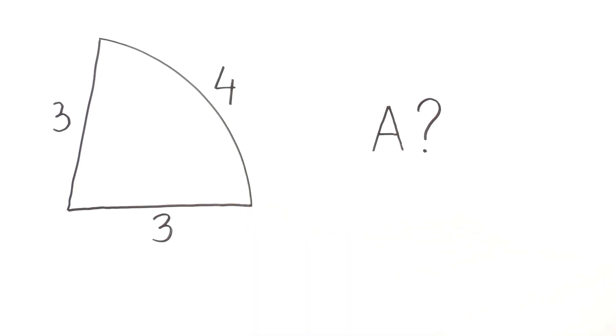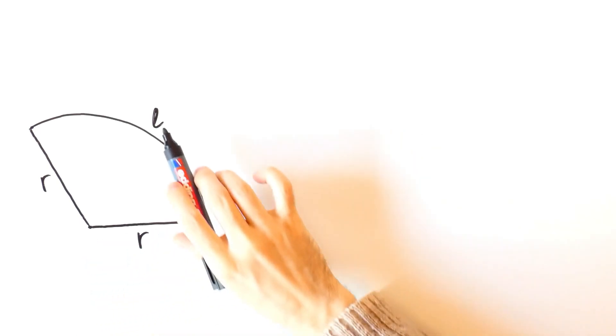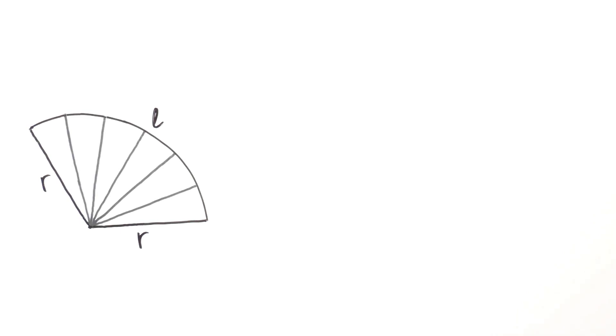Now let's find the formula. Here we have a sector with radius r and arc length l. We'll divide it into smaller congruent parts. Using those parts, we can make the figure on the right.